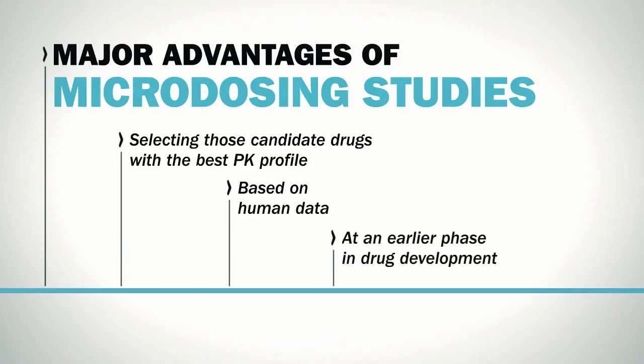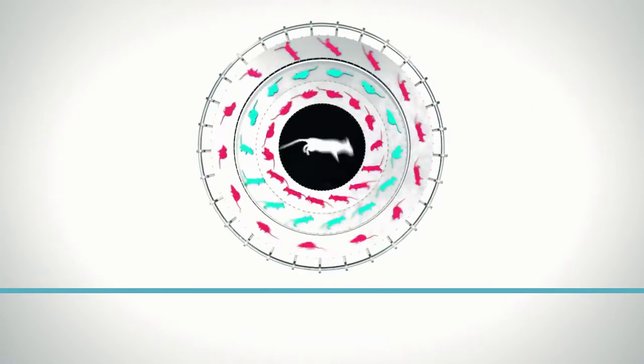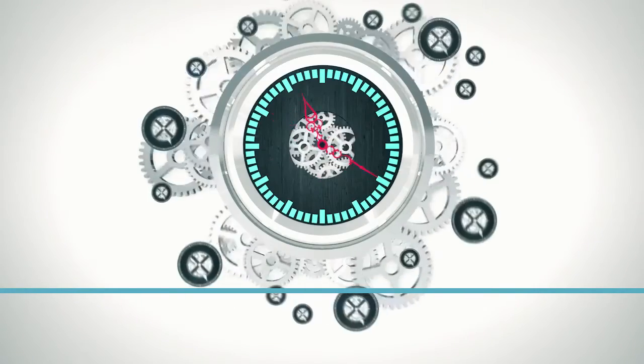And we can do all that at an earlier phase in the drug development process. A more targeted drug development process is more sustainable because it saves animal lives. It is more efficient, which means that clients save precious time and money.